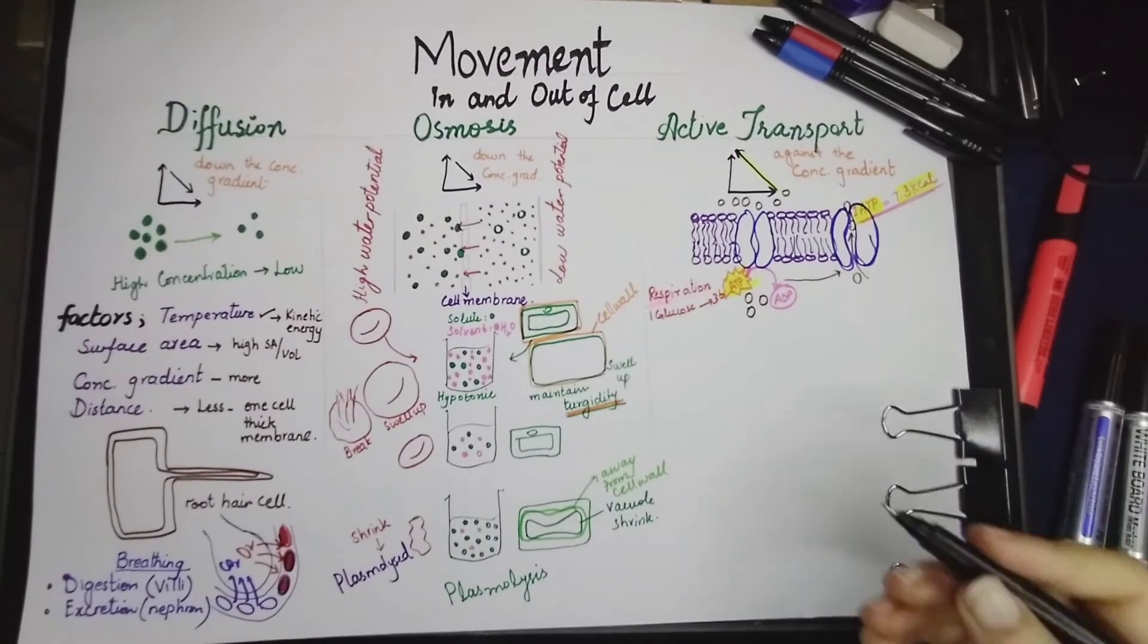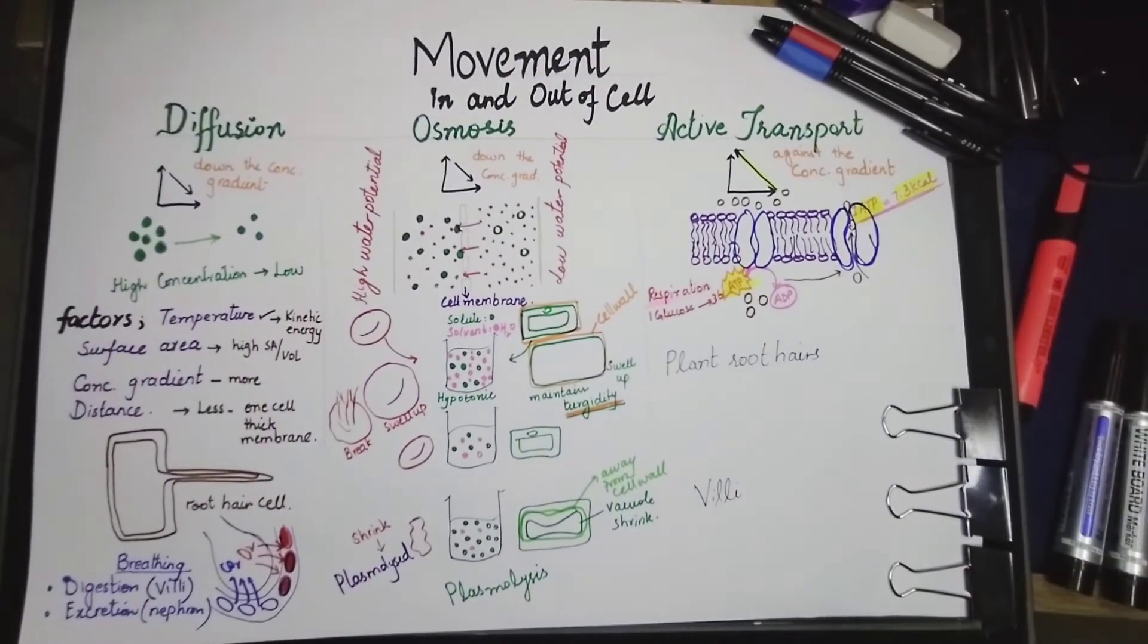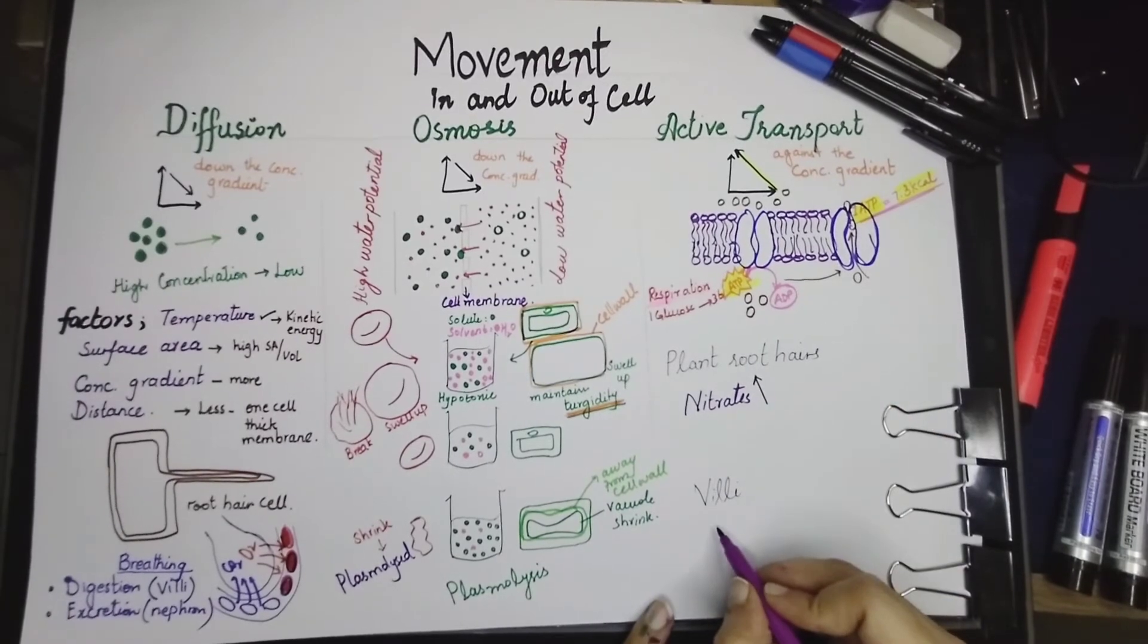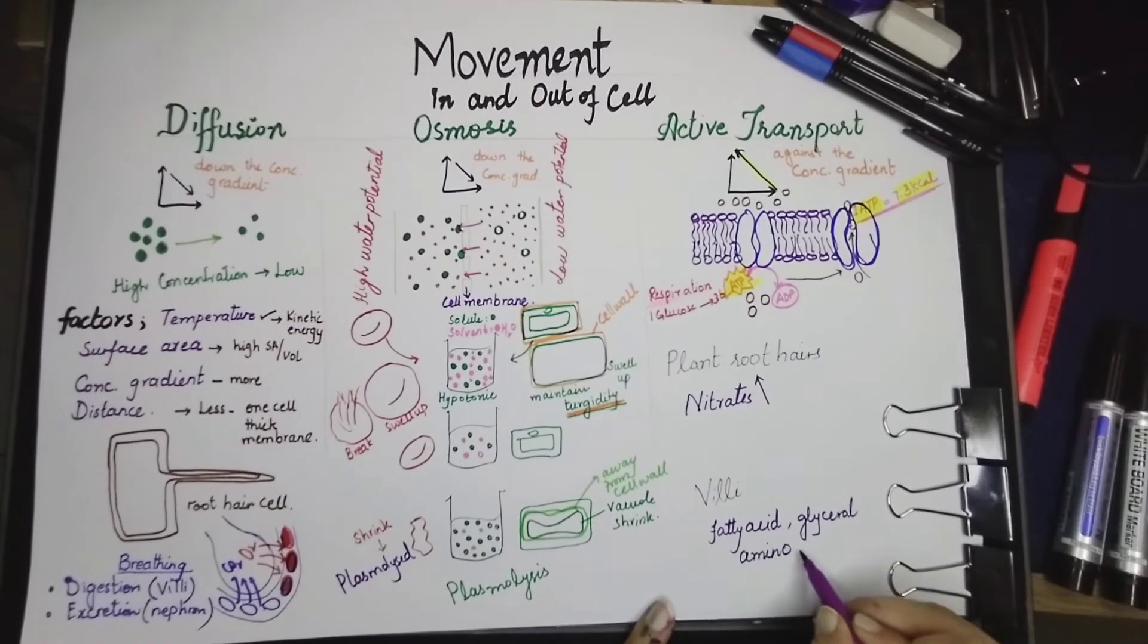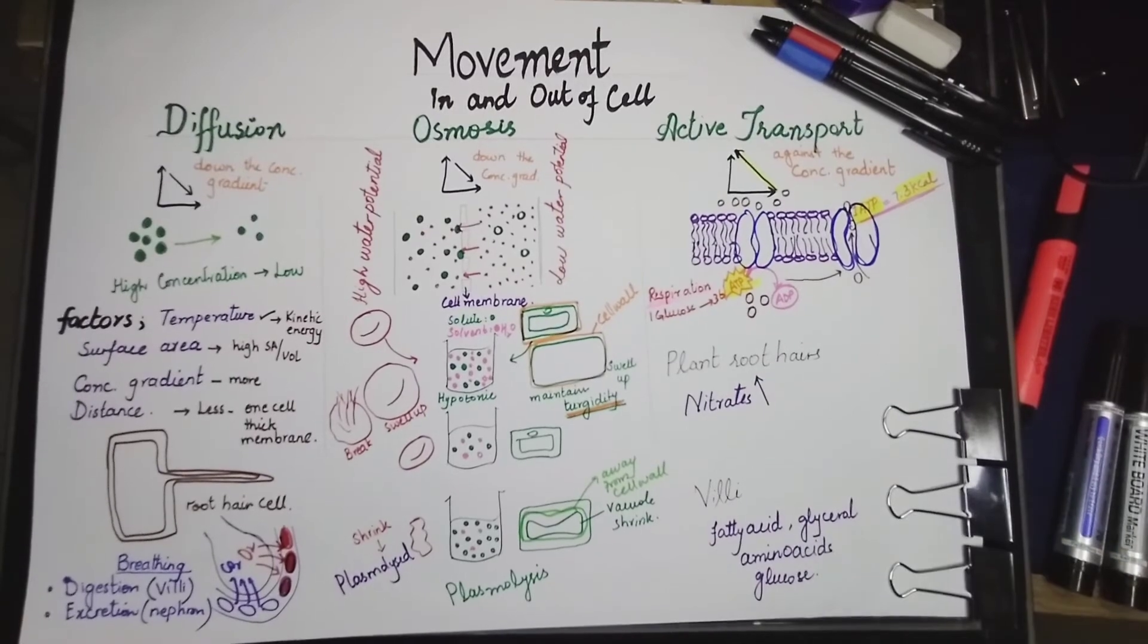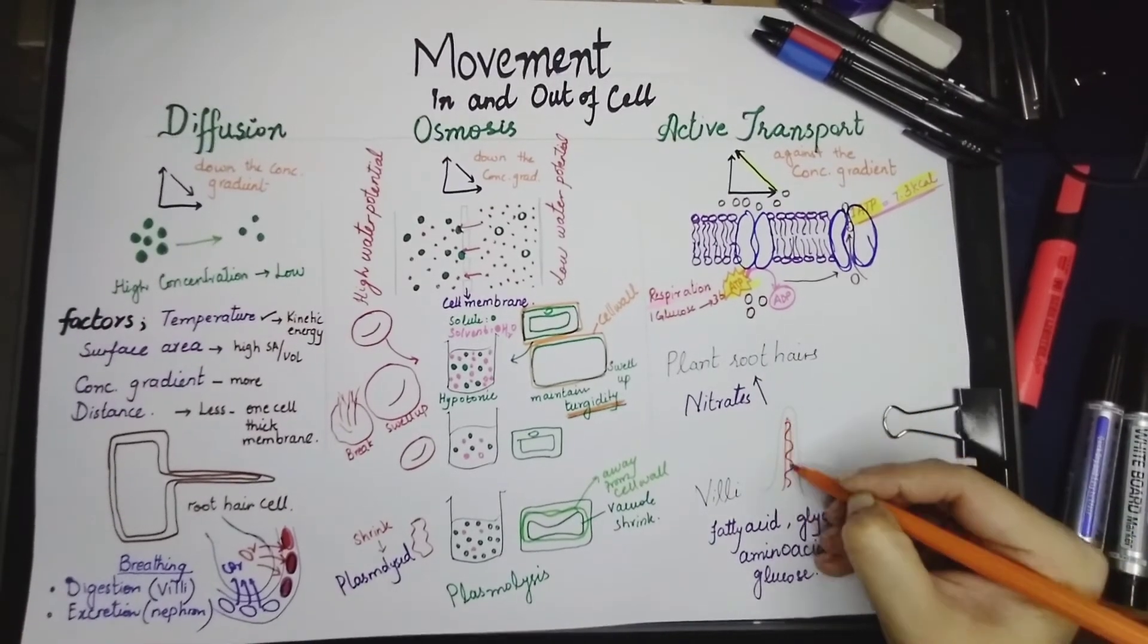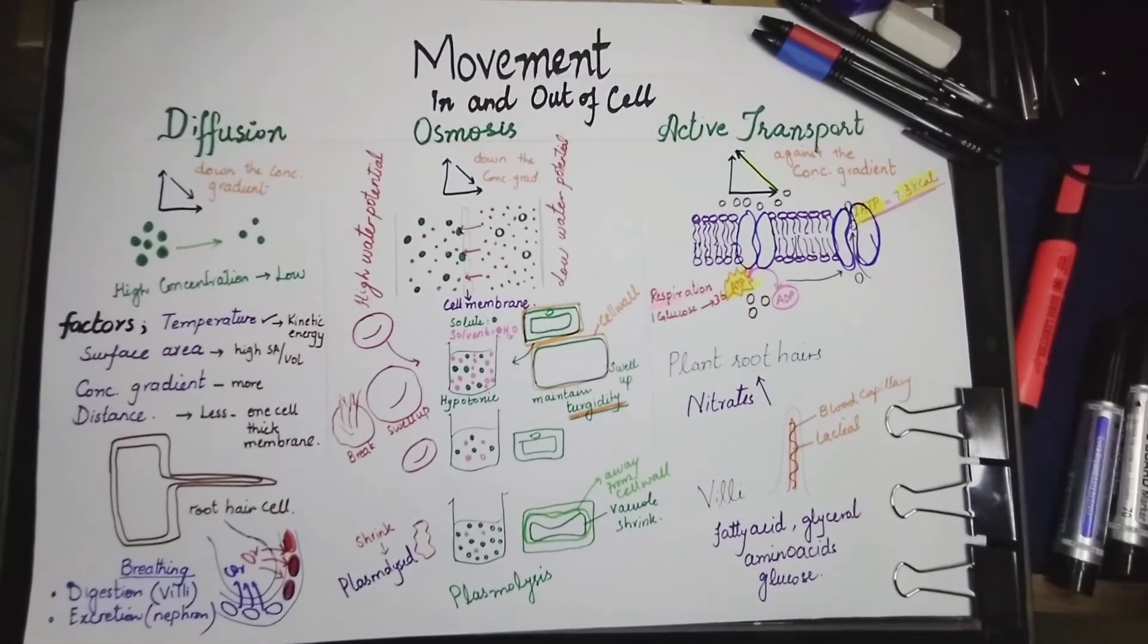We are now going to discuss a very important example of active transport, how active transport takes place in the plant root hair cell and the villi. In plant root hair cell, the nitrates want to enter the plant root hair cell and they are having higher concentration inside and lower concentration outside. So this movement takes place by active transport. Whereas in villi, the active transport of fatty acids, glycerol and amino acids and sometimes glucose also takes place by active transport where the molecules have to enter in the blood against the concentration gradient and where energy is required.